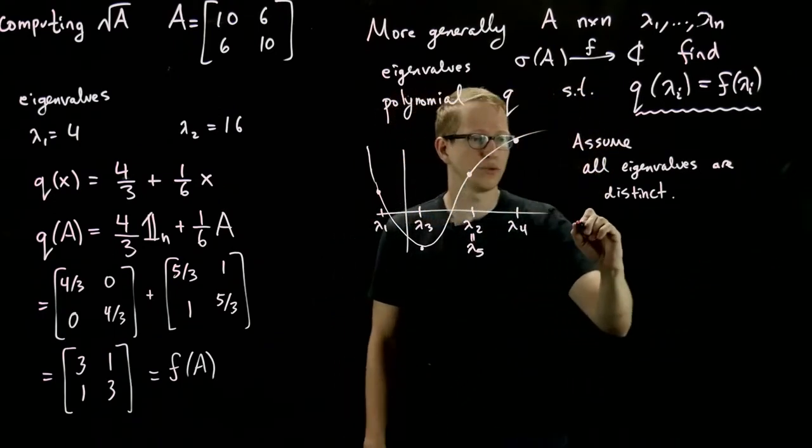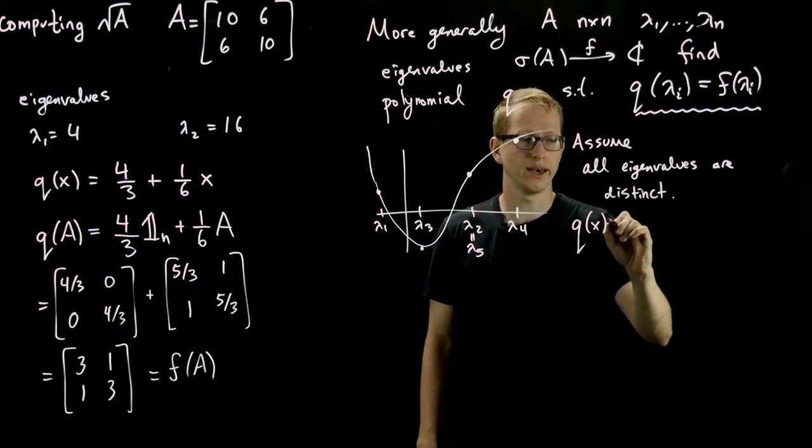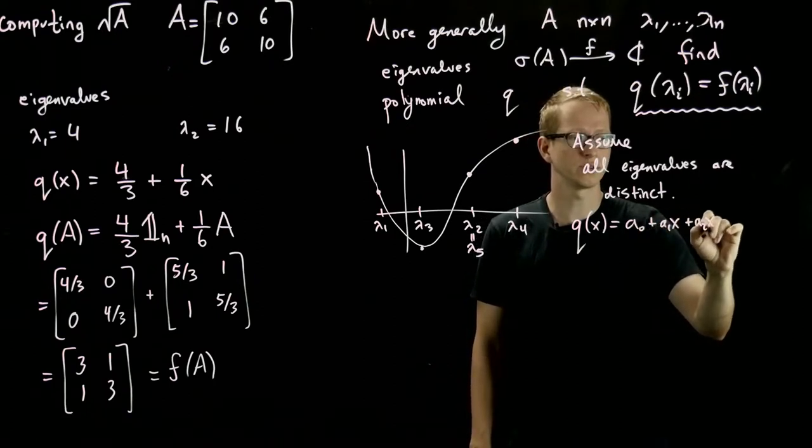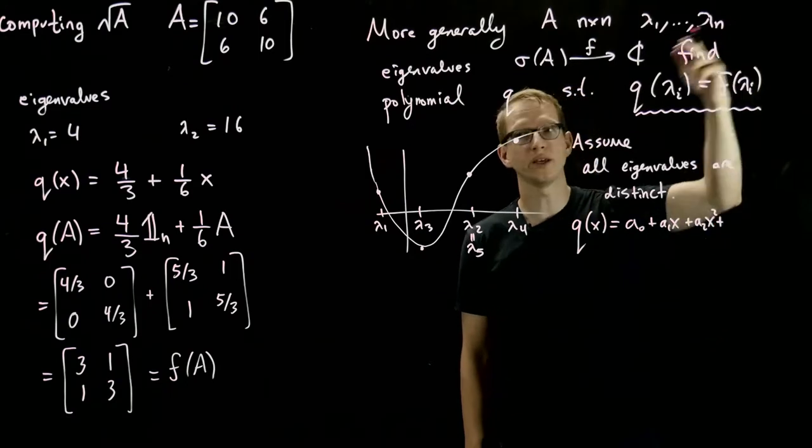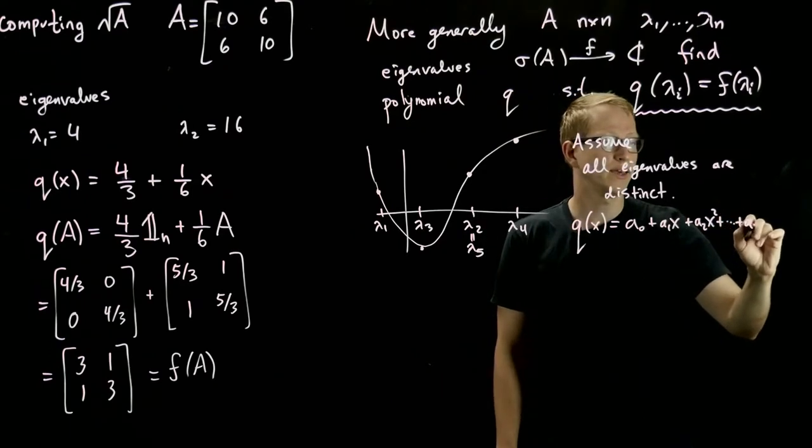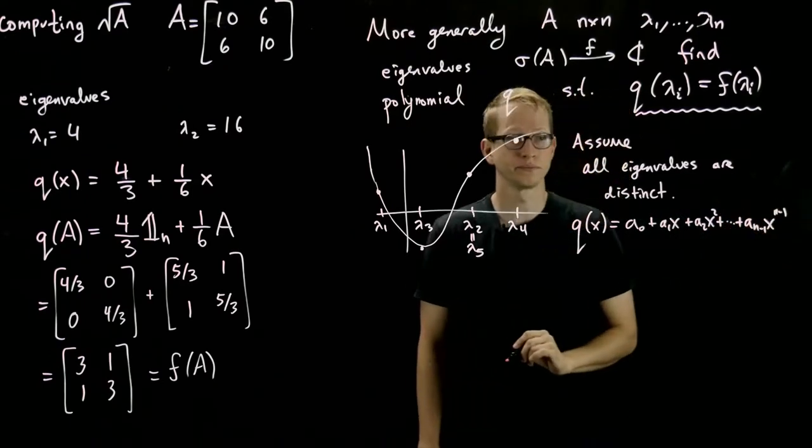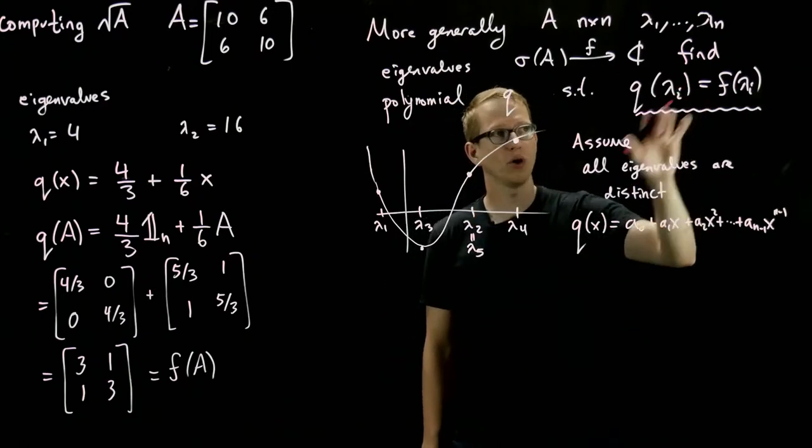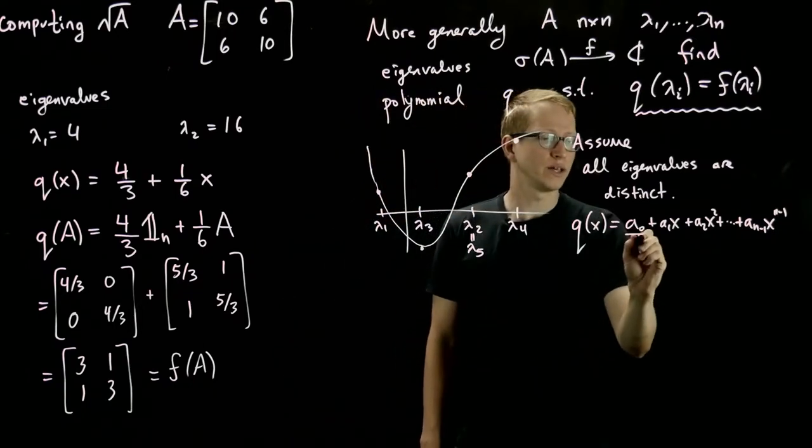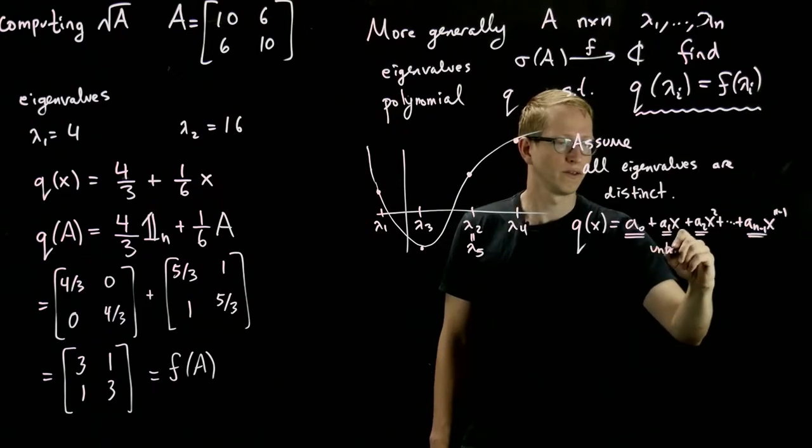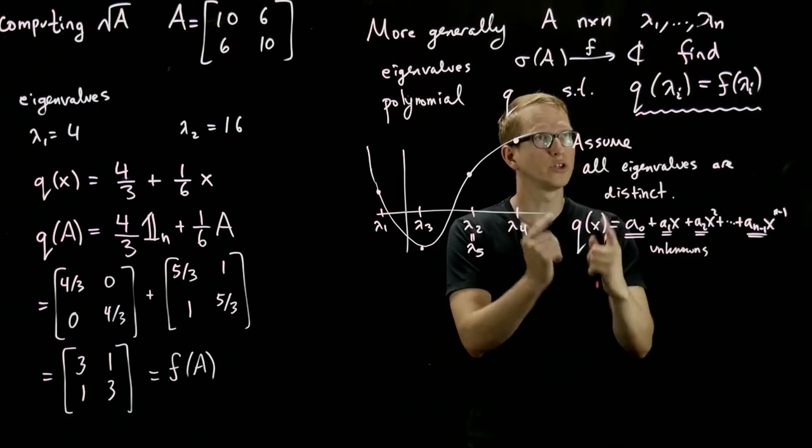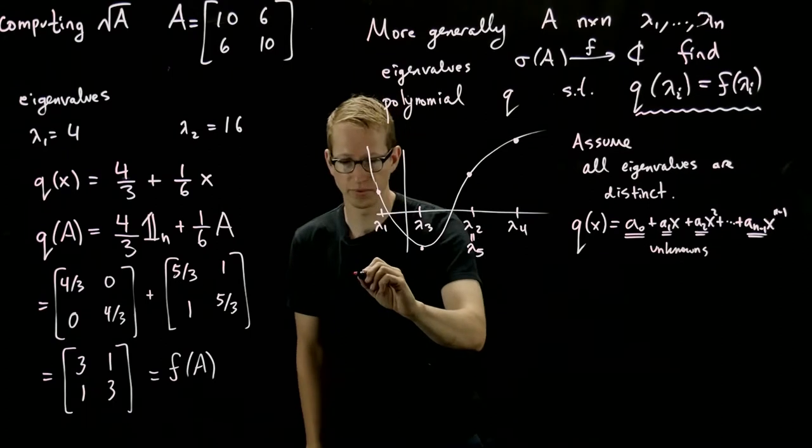Now, when such a thing happens, we can write our polynomial Q of x as a0 plus a1x plus a2x squared, all the way up to the highest degree, which is of the form a(n-1)x^(n-1). And if we write down all these different equations, we're going to get another linear system. The unknowns of that linear system are these a's. And we know the values of x's - those are our different eigenvalues. And we know what the Q of those x's are - it's F applied to those values.